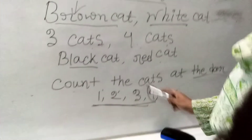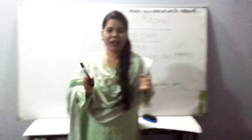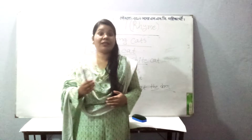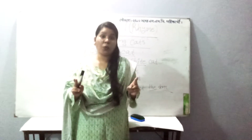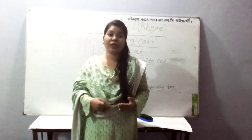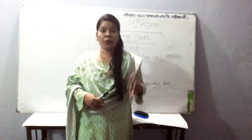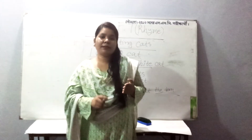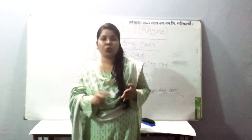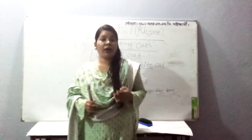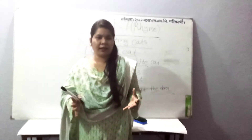That was a very short rhyme for you. From this rhyme, you have to note some of the most important words. There are many nouns — like 'cat,' like 'door,' and the names of different colors. What you have to do is make some new sentences using the color words.